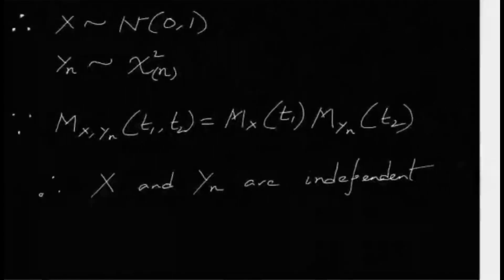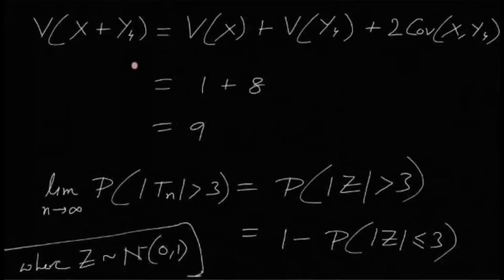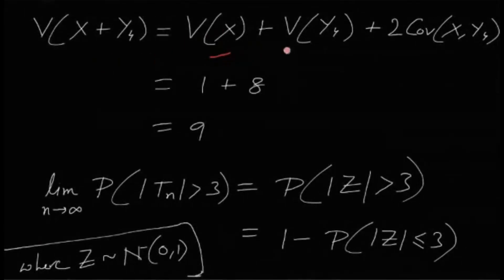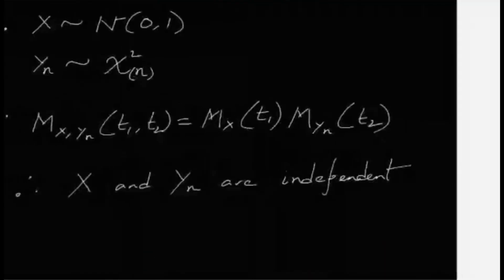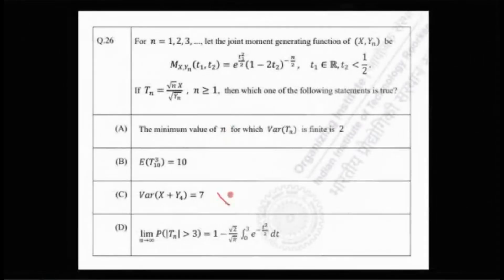Option C claims Var(X + Y4) = 7. We compute: Var(X + Y4) = Var(X) + Var(Y4) + 2·Cov(X, Y4). Since X and Y4 are independent, the covariance is zero, giving Var(X) + Var(Y4) = 1 + 8 = 9, not 7. So option C is also false.